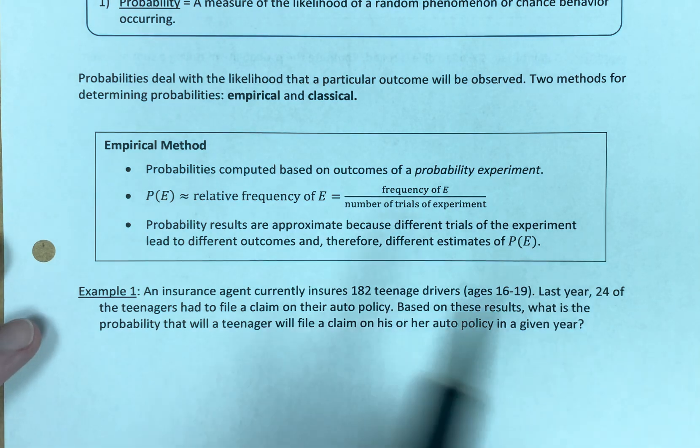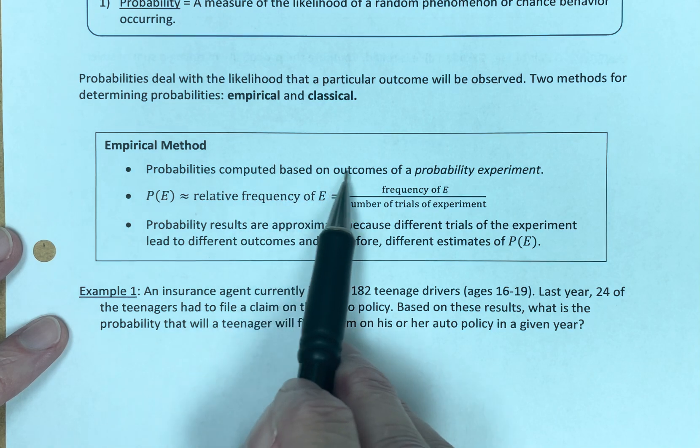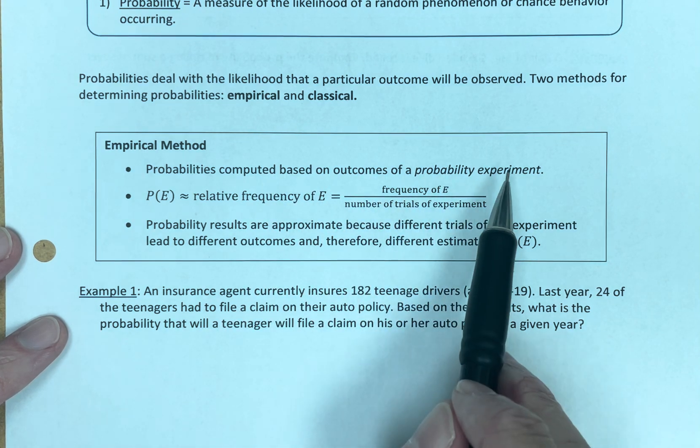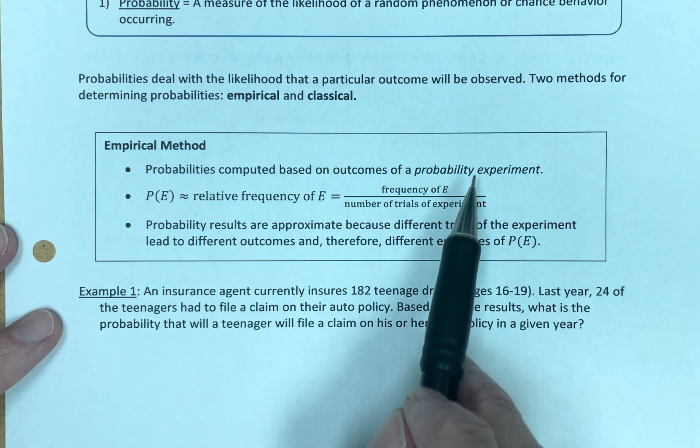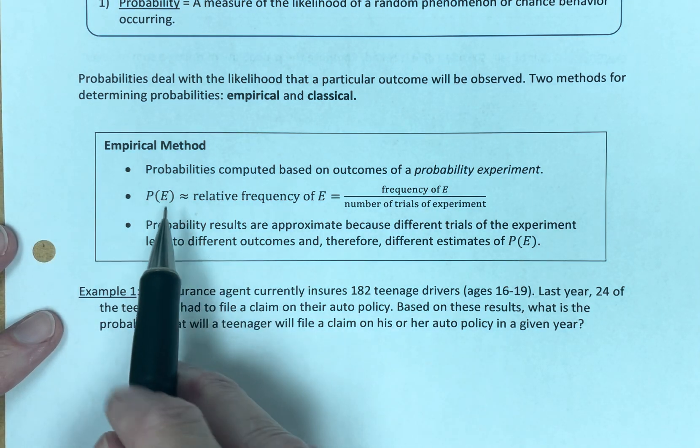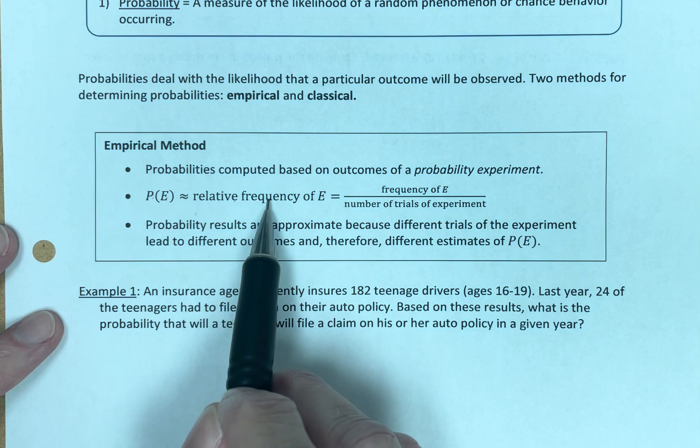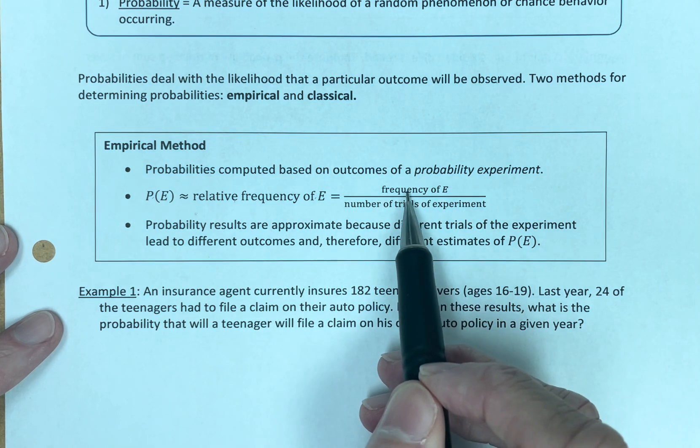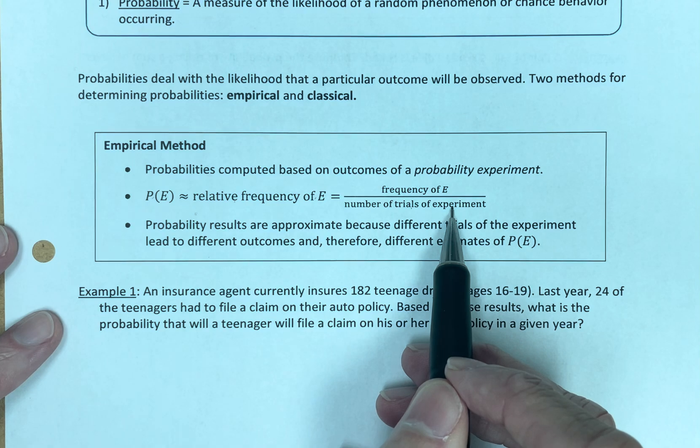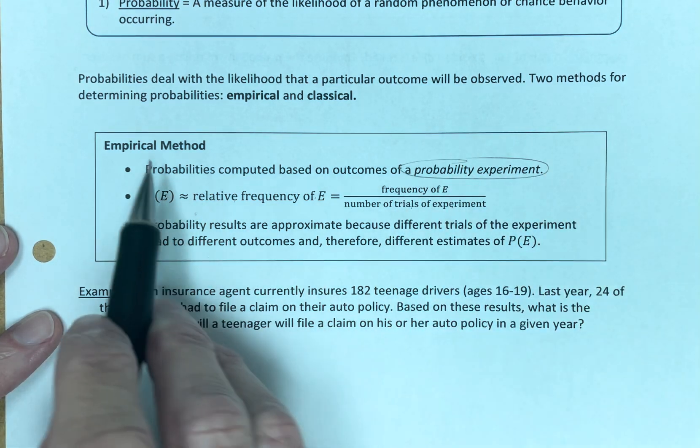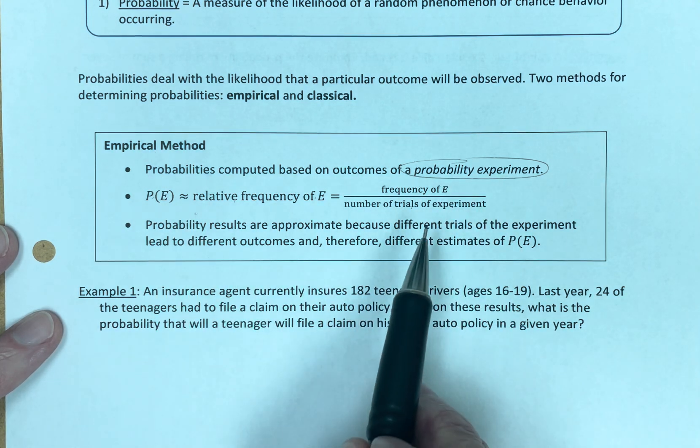Let's start with empirical. Empirical method involves probabilities that are computed based upon the outcomes of a probability experiment. So you've done an experiment and you're computing the probabilities based on that experiment. To calculate the probability of an event, it's approximately equal to the relative frequency of the event, which is the frequency of the event divided by the number of trials of the experiment. This is the key piece. The empirical method means you did a probability experiment and that's how you're determining your probabilities.